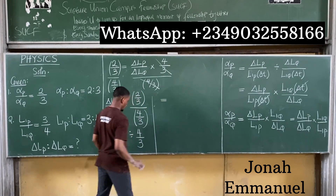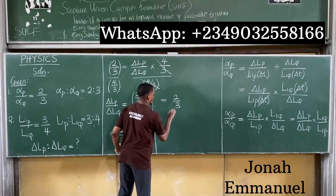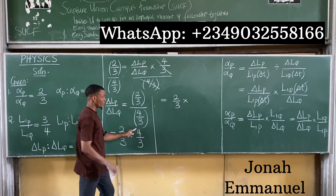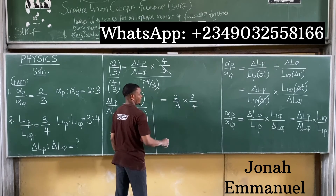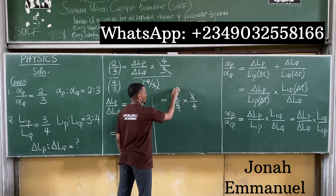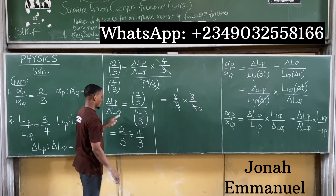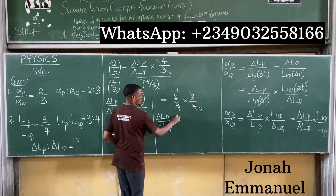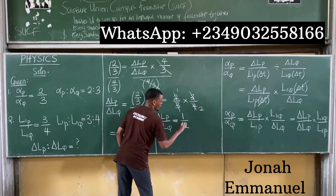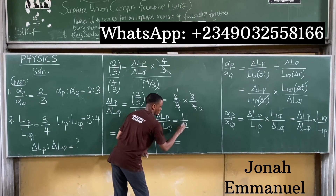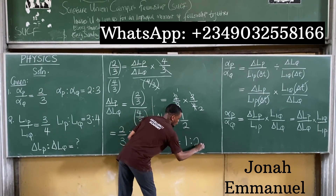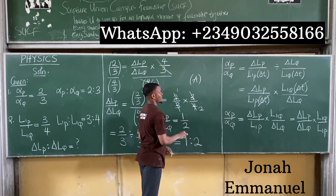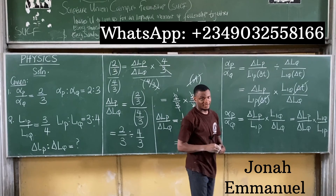Solving: (2/3) × (3/4) — the 3s cancel, leaving 2/4, which simplifies to 1/2. So the change in length of P to the change in length of Q equals 1/2, or expressed as a ratio, 1:2. This corresponds to option A, which is the correct answer.